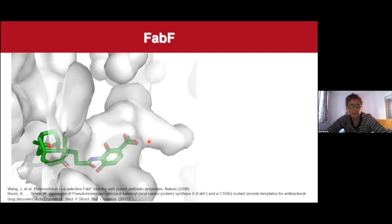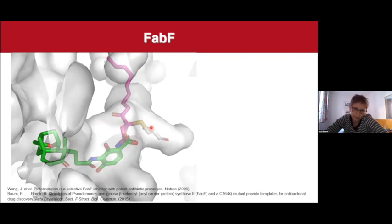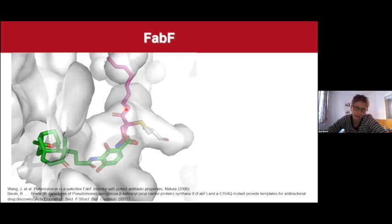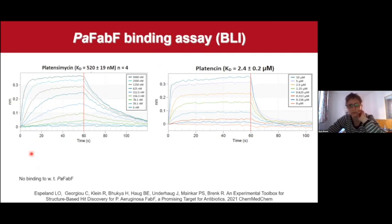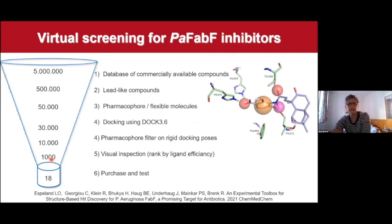In order to do this, we first determined the crystal structure of the Pseudomonas aeruginosa FabF some years ago. We now also have the crystal structure in complex with platensimycin, which occupies the binding site where malonyl-CoA binds. When we superimpose this with the crystal structure that has cerulenin bound, we can see it binds in the fatty acid channel. So in principle, we have two binding sites we can target: the fatty acid channel and the malonyl-CoA pocket. When targeting an enzyme, we also need binding assays; we use biolayer interferometry to measure on and off rates and determine KDs, and we also have an NMR-based screening assay where we can simply assess binding or non-binding.